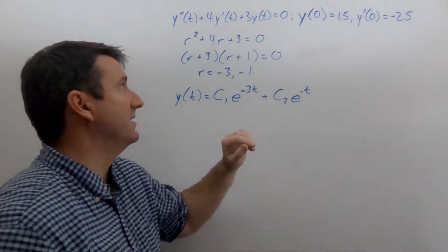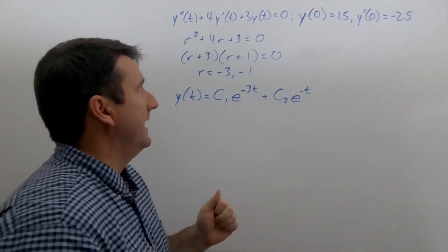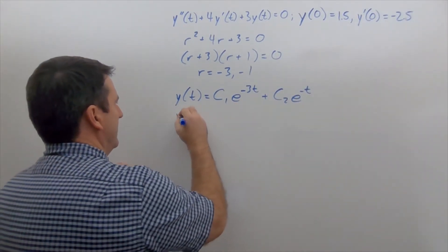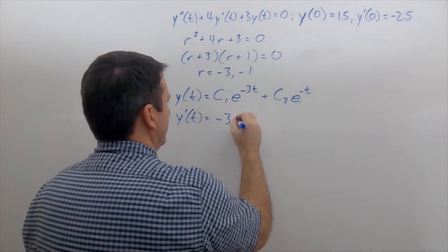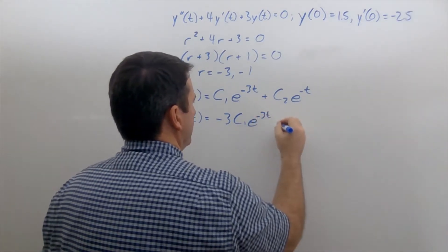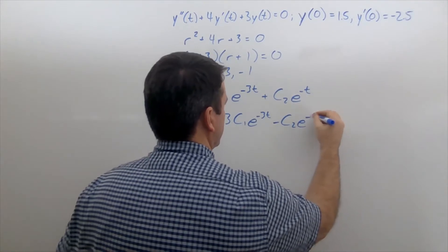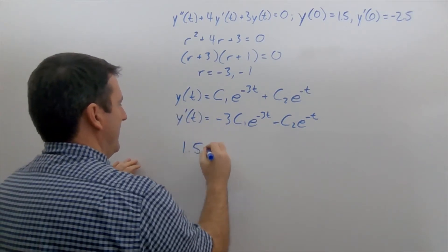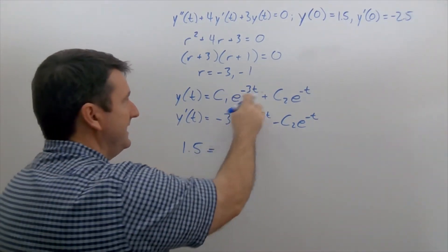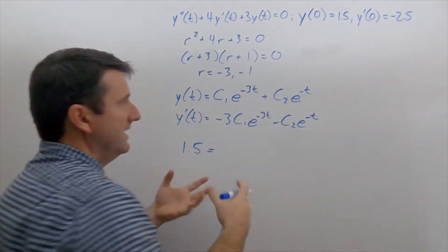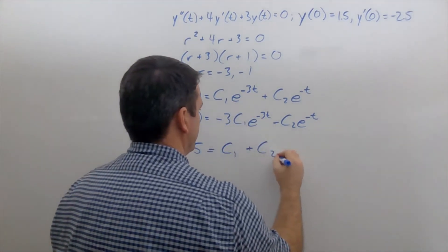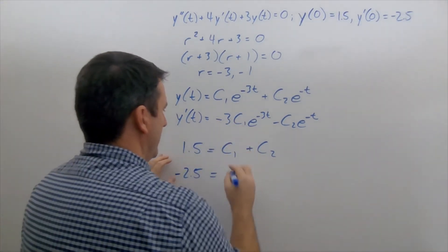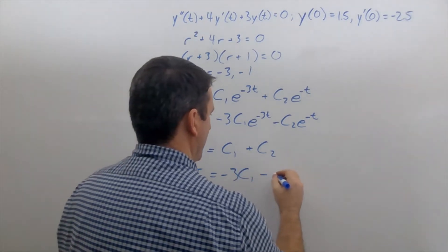This is an initial value problem, so we can solve for c₁ and c₂ by plugging in our initial conditions. First, y'(t) = -3c₁e^(-3t) - c₂e^(-t). Using our initial conditions, we get 1.5 = c₁ + c₂, and -2.5 = -3c₁ - c₂.